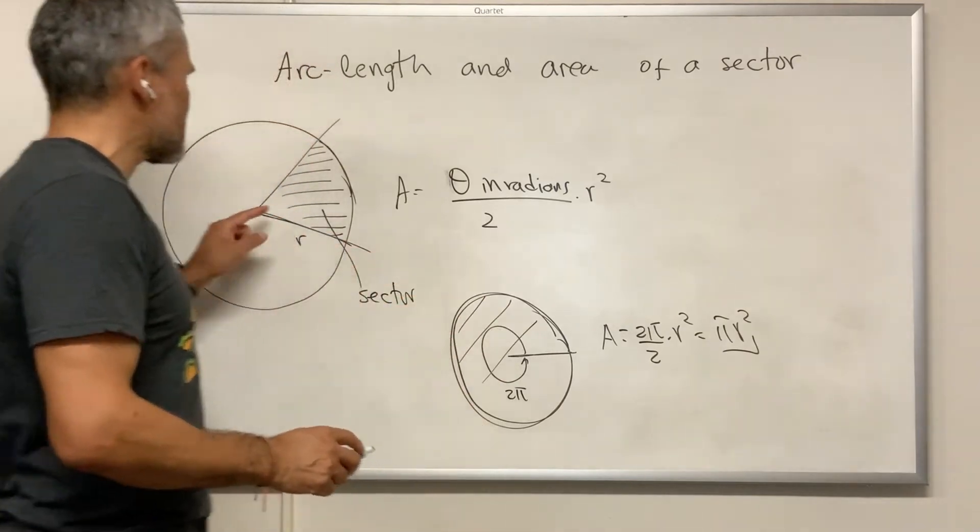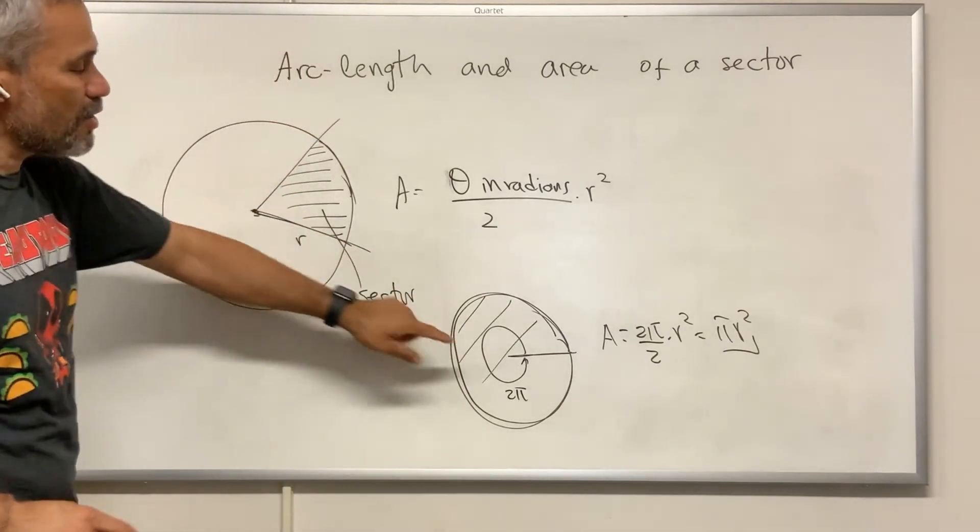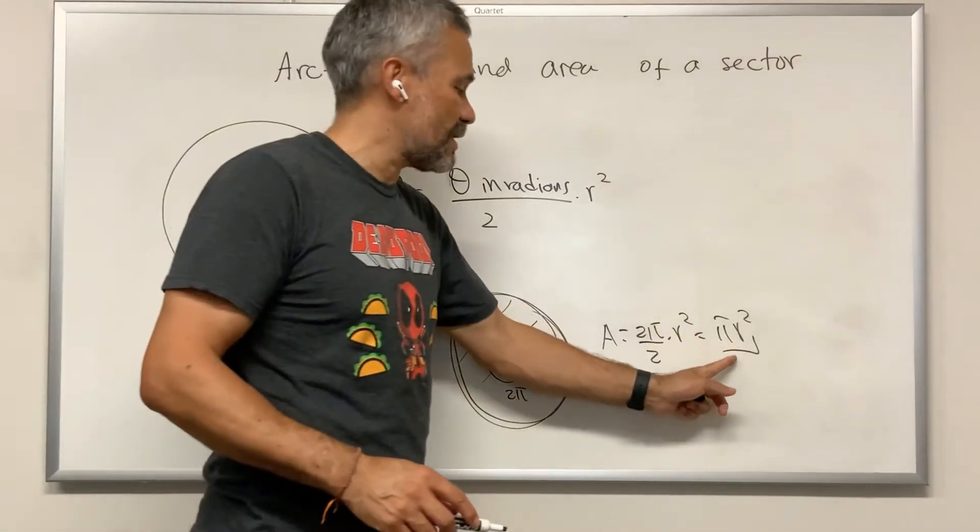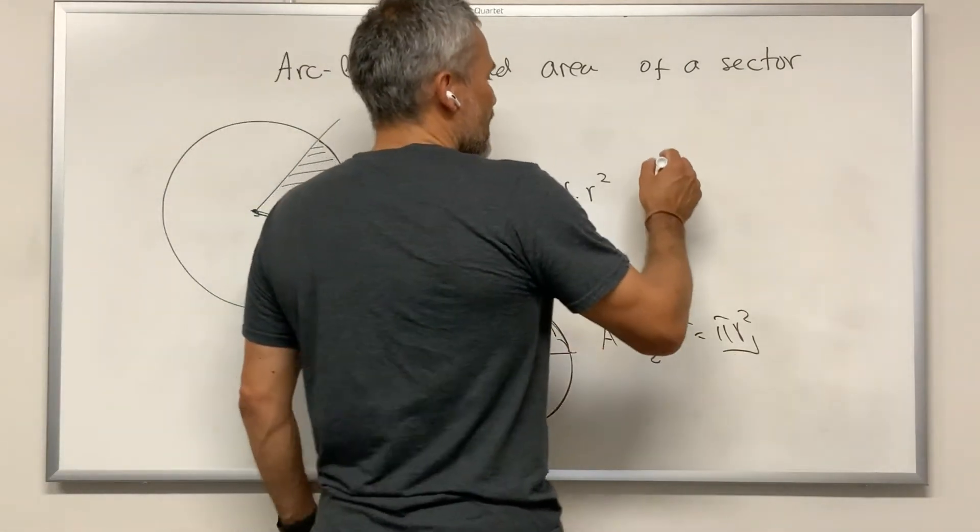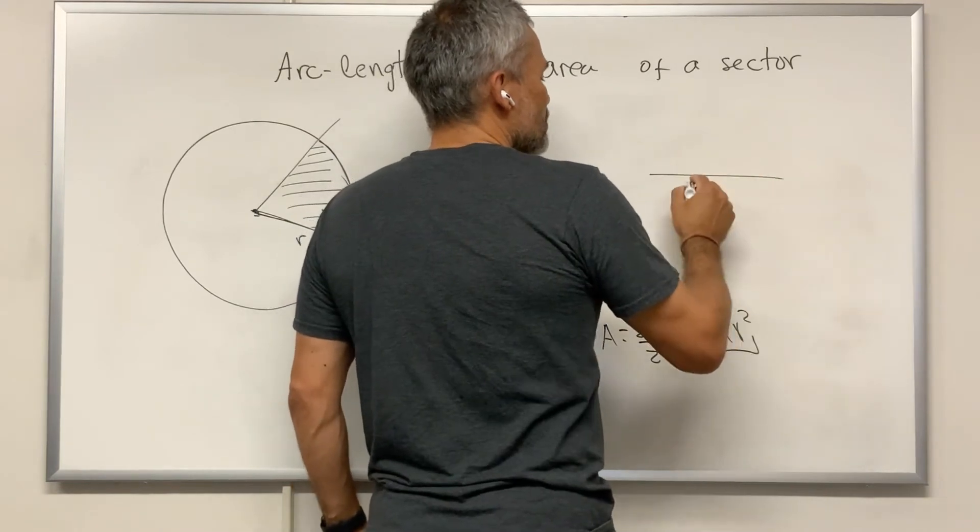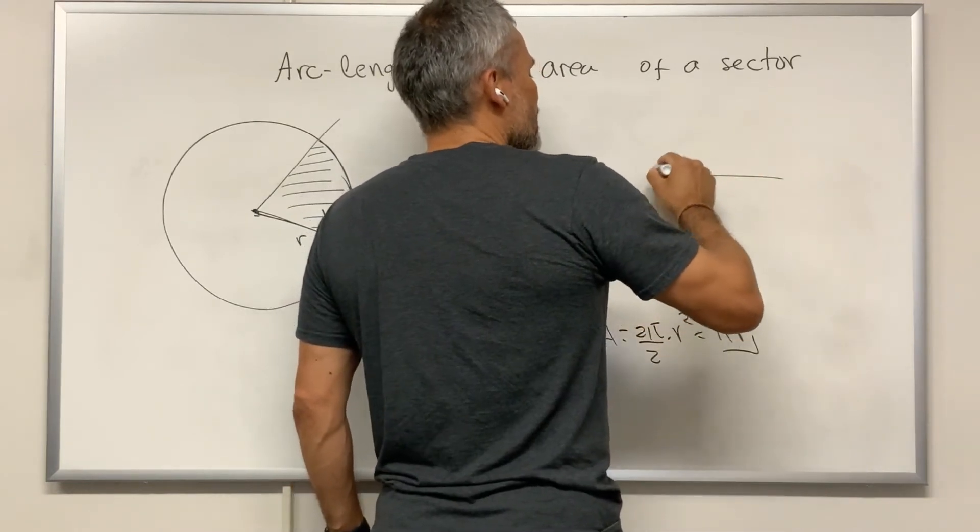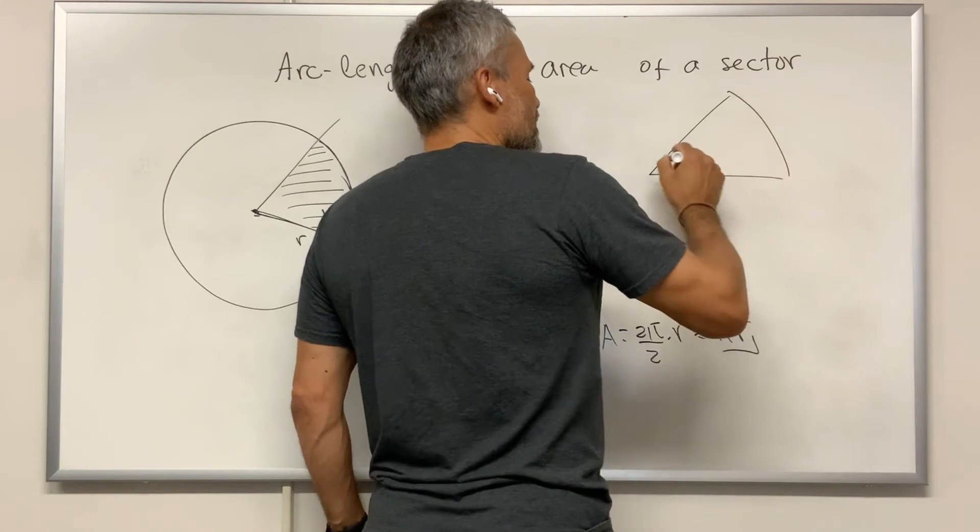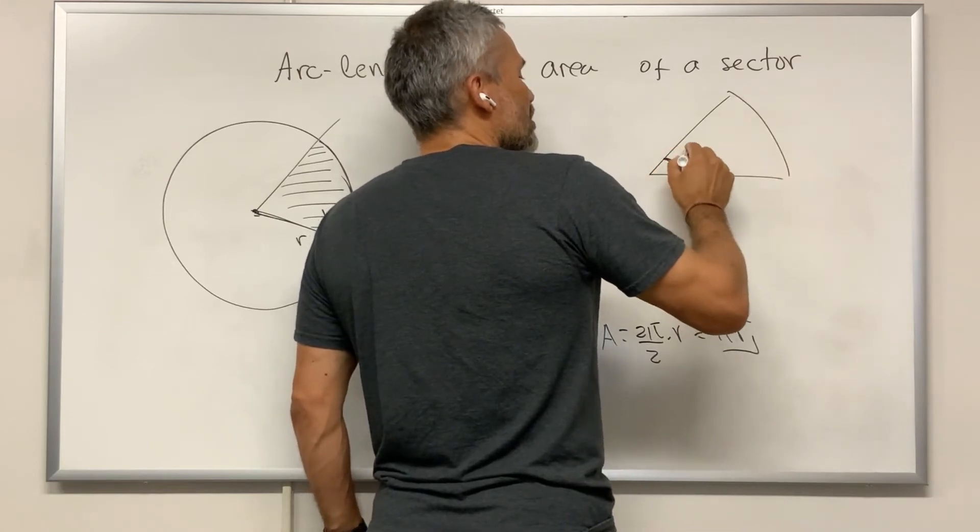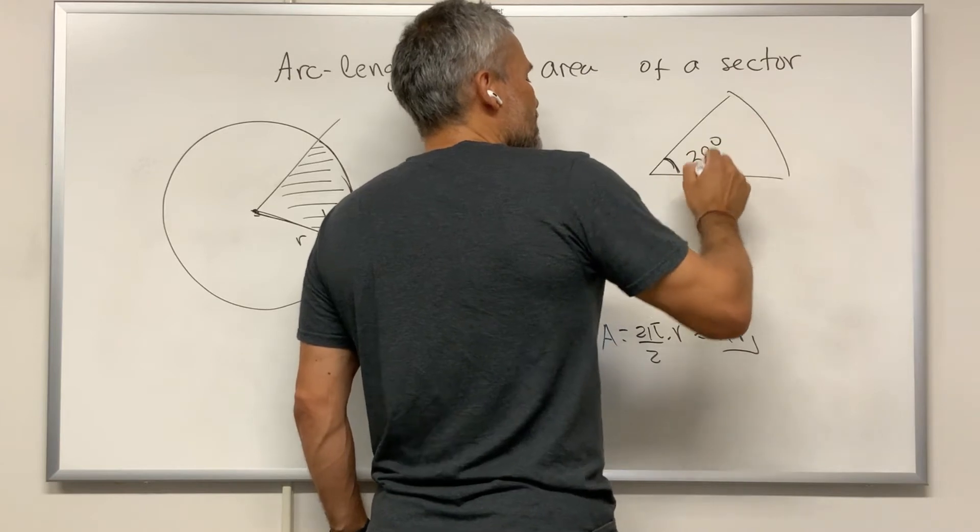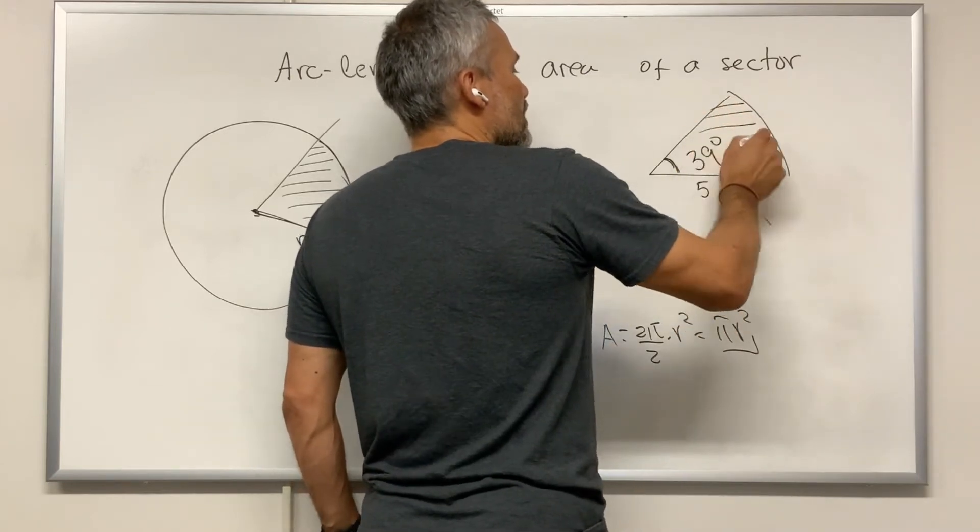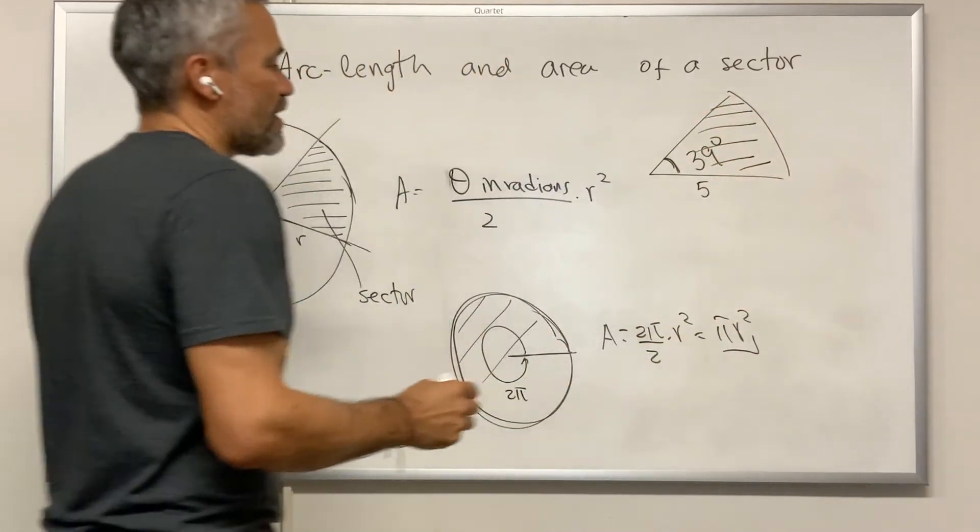When we have a sector with angle 2π, we have a whole circle and this is the area of that circle. We have something like, let's suppose that this is 5 and that this angle is 39 degrees. How do we compute the area of that sector?